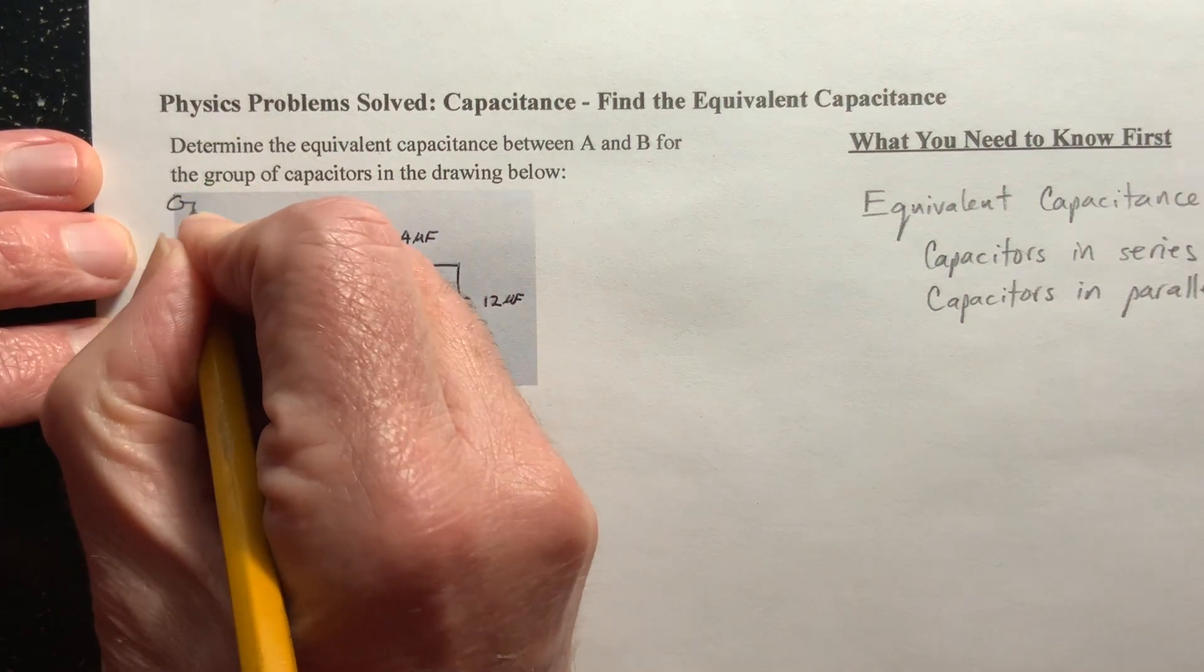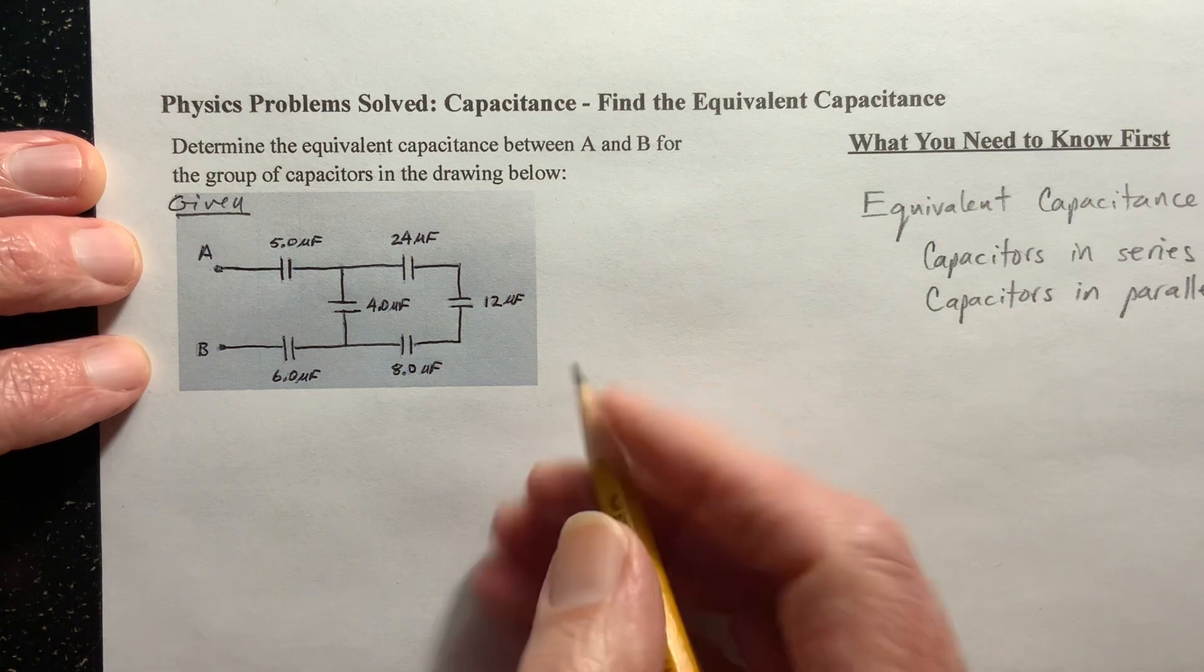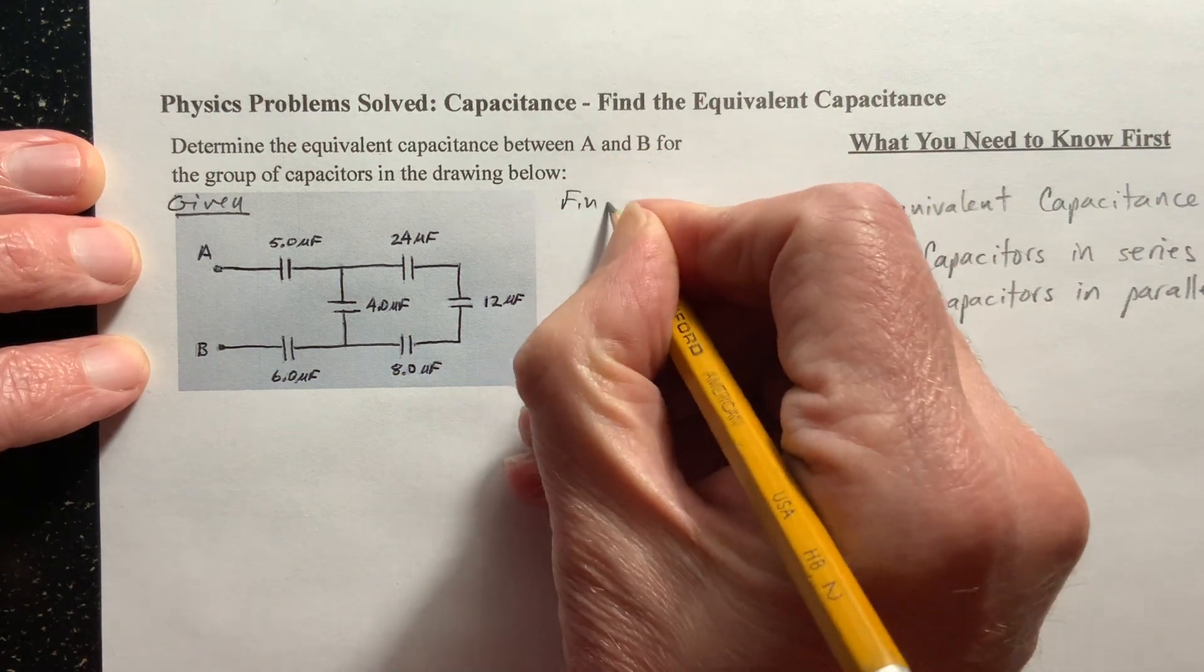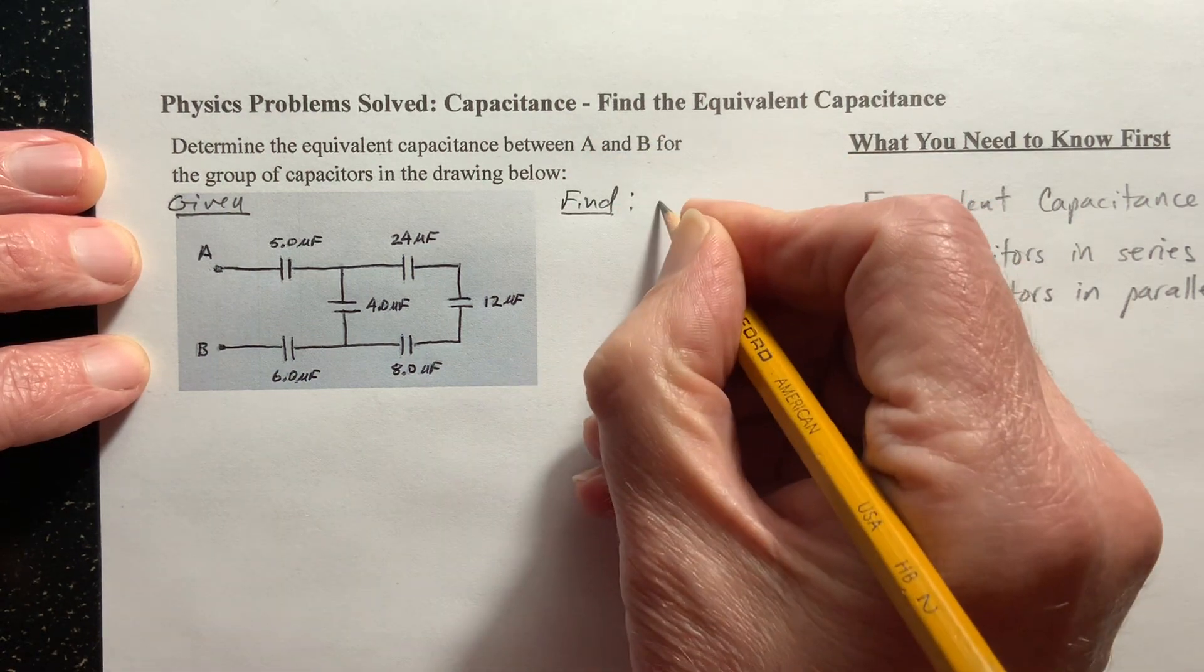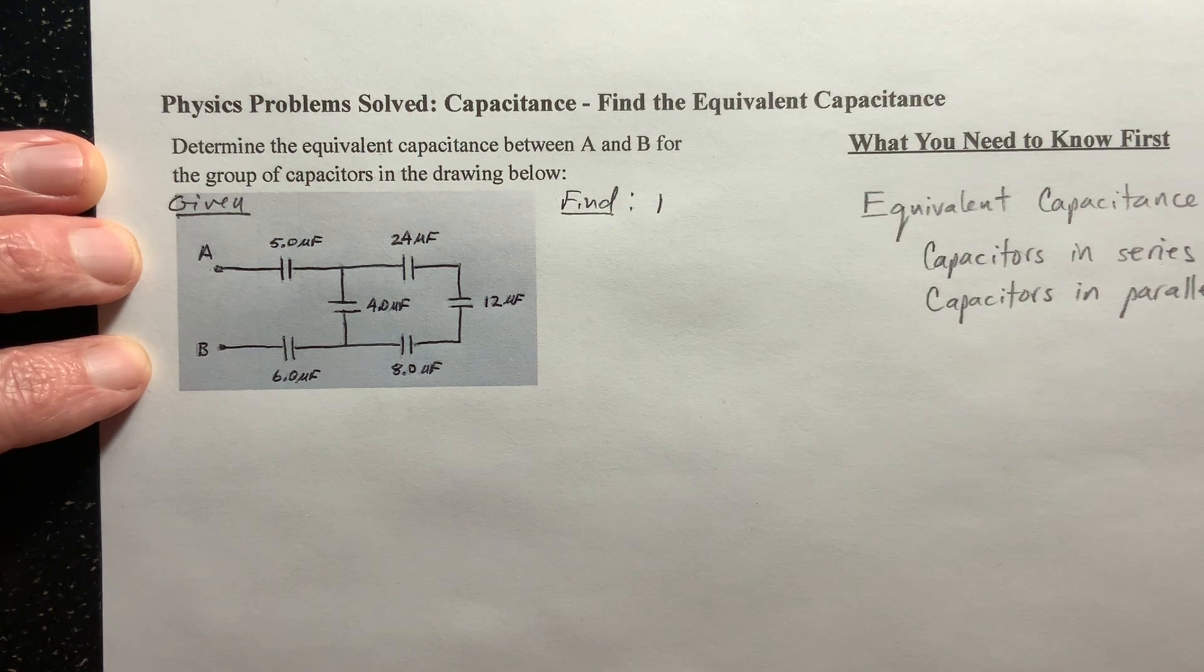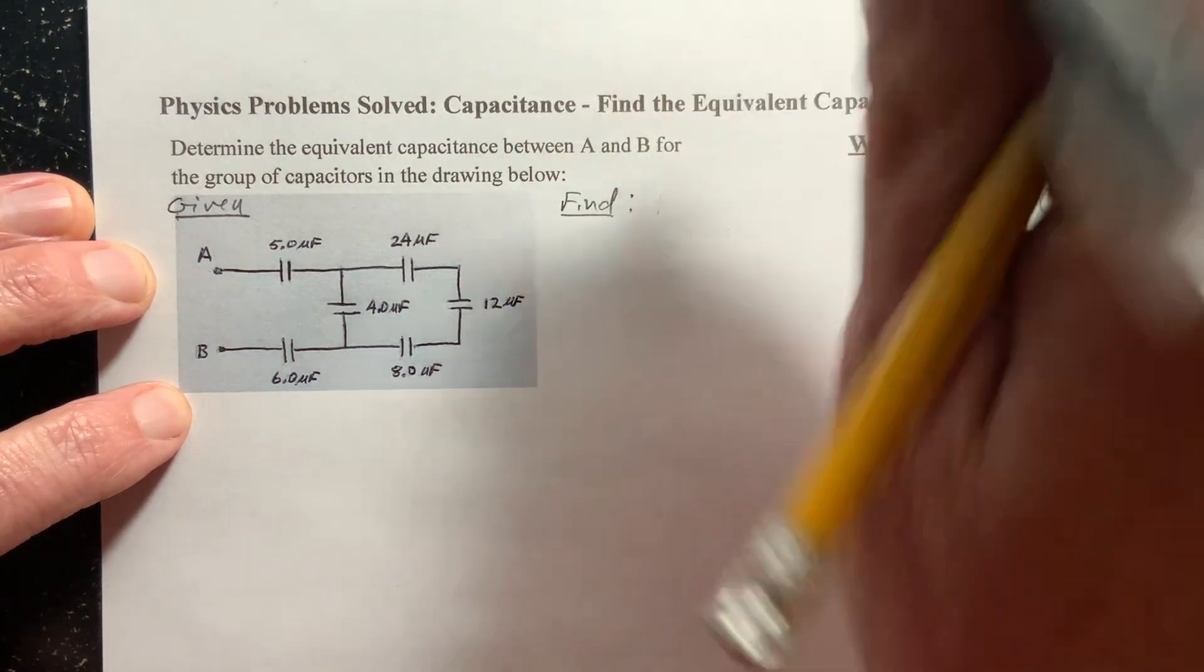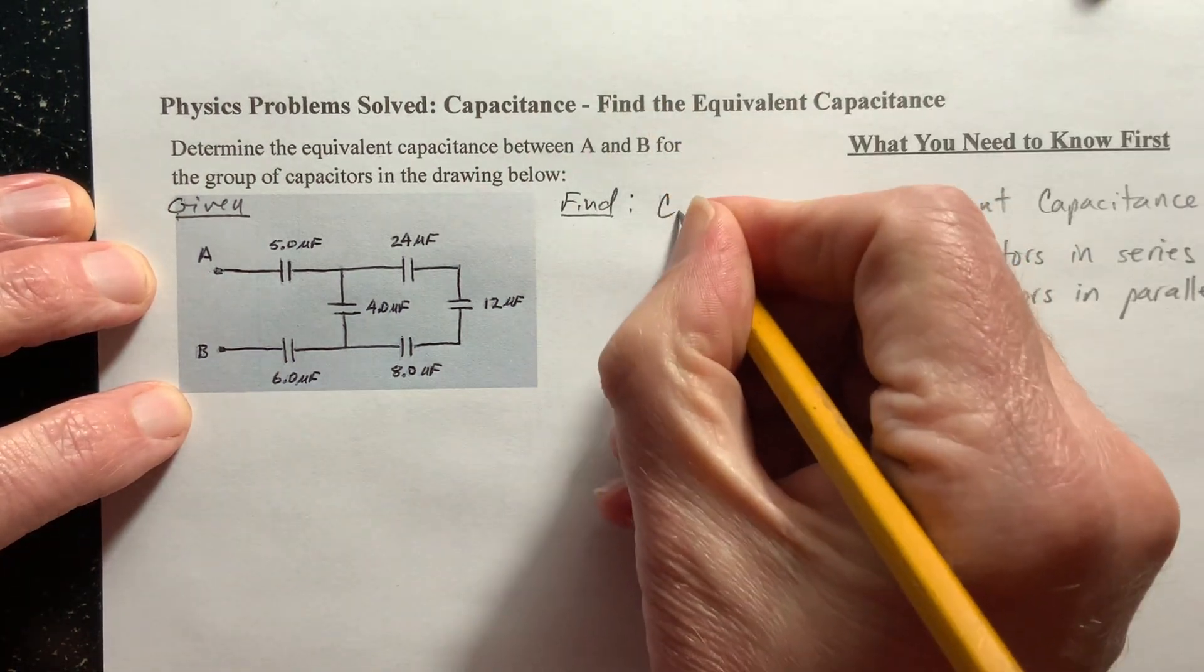Let's see. Well, this is what's given, right? This is everything that I need to know. And what we're trying to find is the equivalent capacitance, and the way we write that is C equivalent.